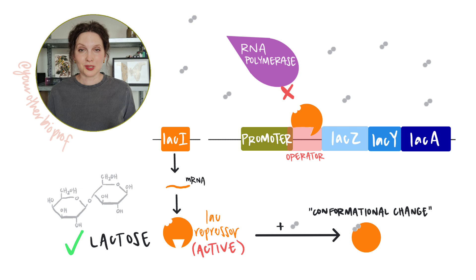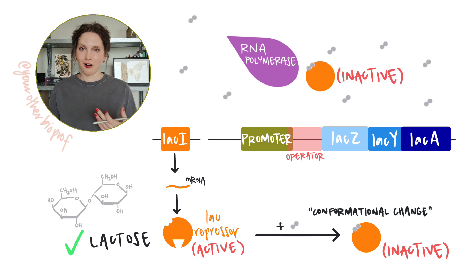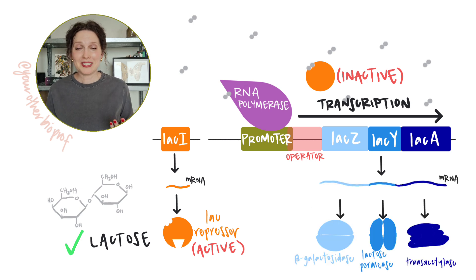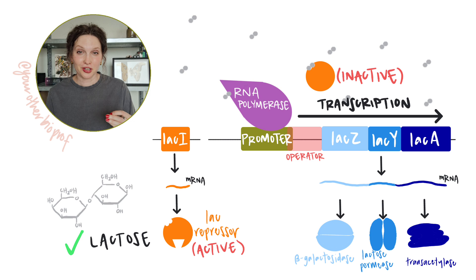So when the inducer molecule is present, it binds to the repressor, effectively inactivating the repressor. The repressor is no longer bound to the operator, and RNA polymerase's path is cleared up. So RNA polymerase can now access the promoter and initiate transcription of the structural genes. That's why this little molecule is called an inducer. To induce means to start something up, and here we're starting up transcription.